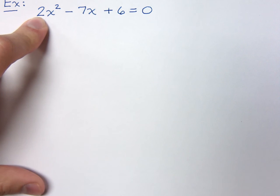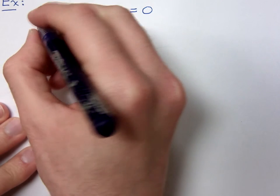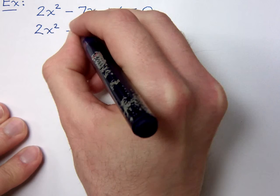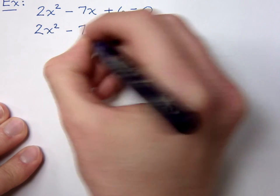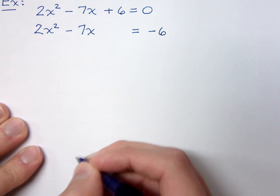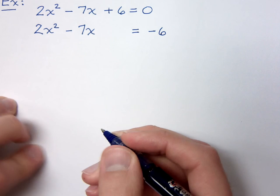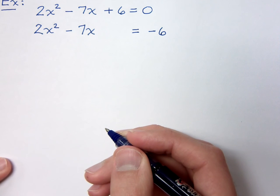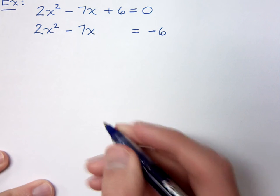But follow those steps that we had in the last video for completing the square. Now the first step was to move the constant to the other side. Alright, so 2x squared minus 7x, and this is going to equal negative 6. That's the first step, that's simple. That's the very beginnings of algebra that you've seen. Move things from one side to the other.